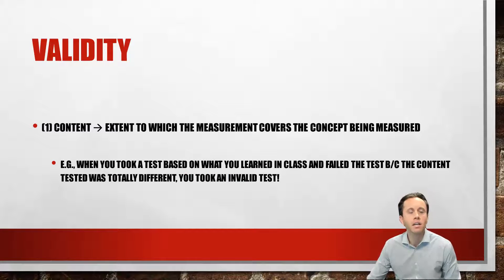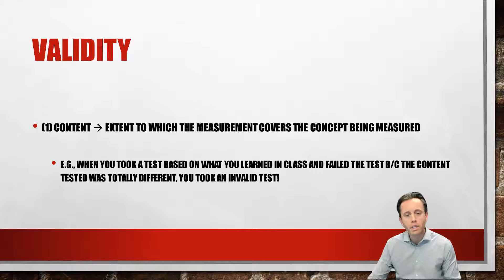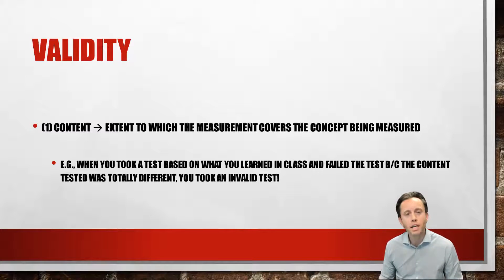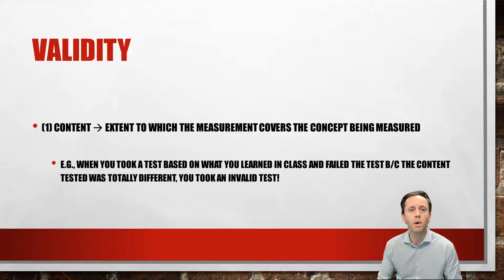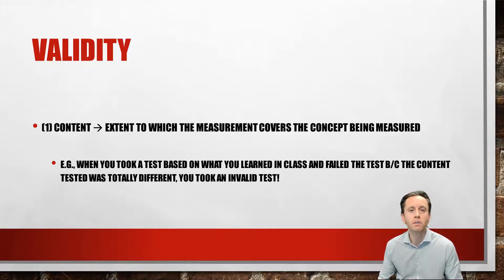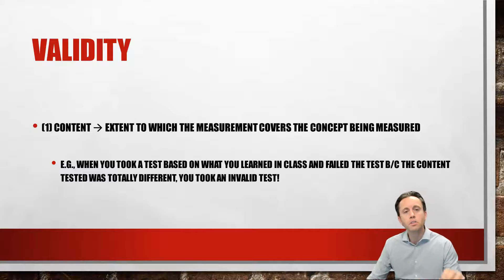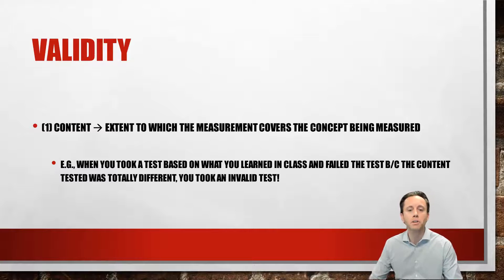We shift now to validity. We're thinking about three other types of validity. The first is content validity, which is the extent to which the measurement actually covers the concept being measured. Do you remember those tests in college — say, biology — where you had 50 questions on the multiple choice test and some questions came out of left field? You never covered that content; it wasn't covered in the book or in the lectures. Those components led to an invalid test because it didn't actually measure what was experienced.